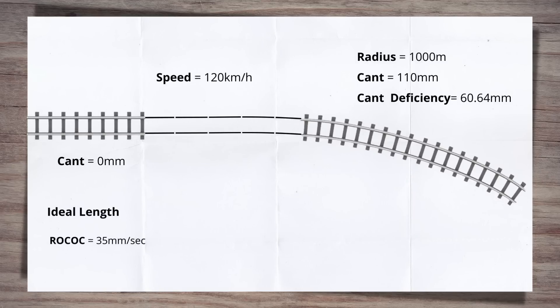First, we will look at the ideal length of the transition. For this, we need our normal design values. Remember, we have to do the calculation for both the cant and the cant deficiency. Given these equations are so similar, we will look at the rate of change of cant first in a bit more detail, then summarise the cant deficiency. So here is our equation. So let's sub in our values. On the left, we have our cant value. Remember, we're going from zero mil cant in the straight to 110 millimetre cant in the curve, so the change is 110 millimetres. Our speed is 120, while our normal value for the rate of change of cant is 35 millimetres per second. This gives us an L value of 104.76 metres.